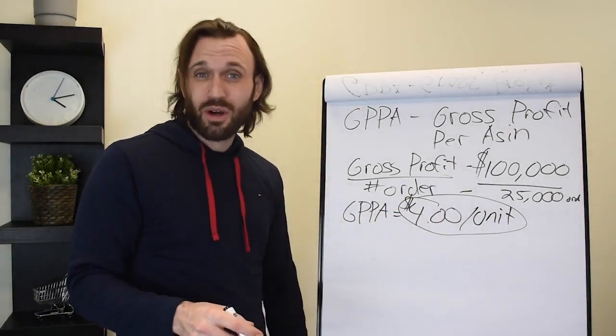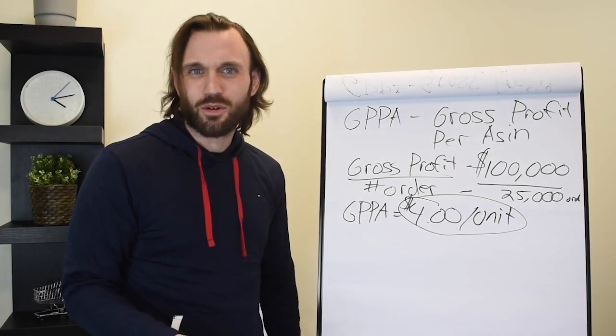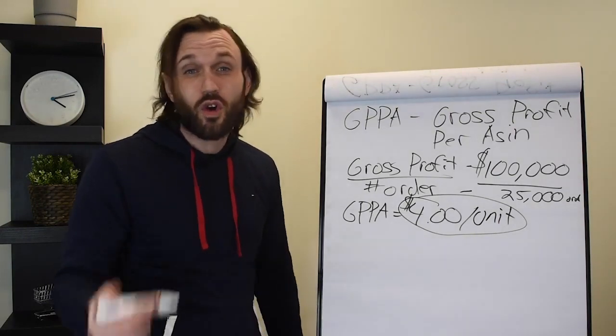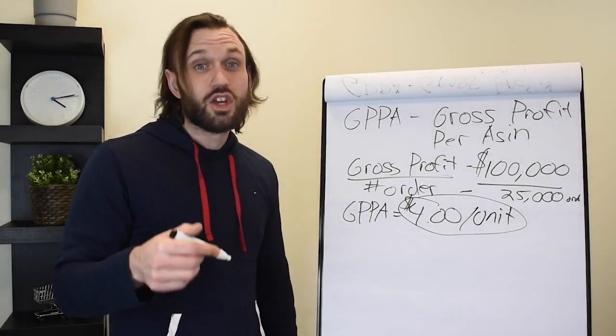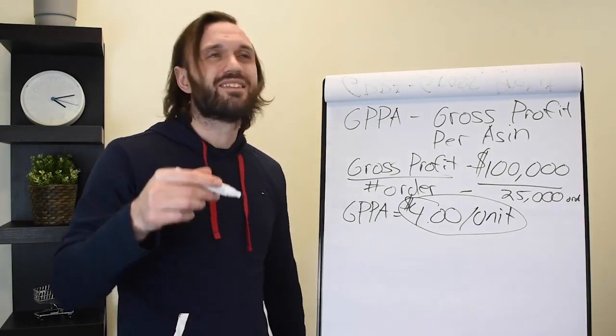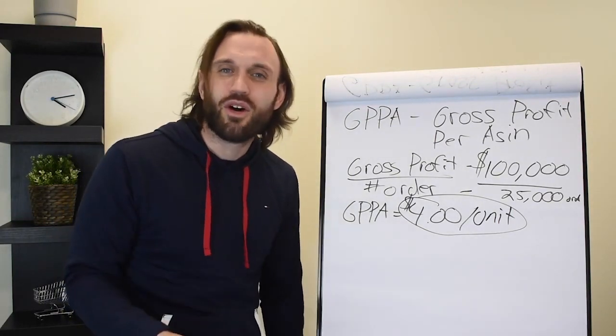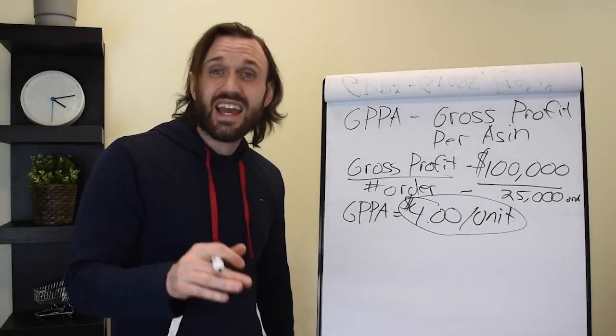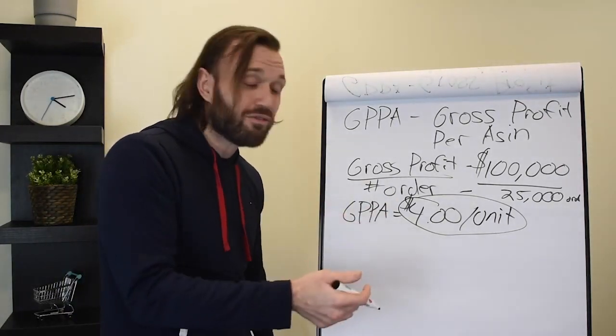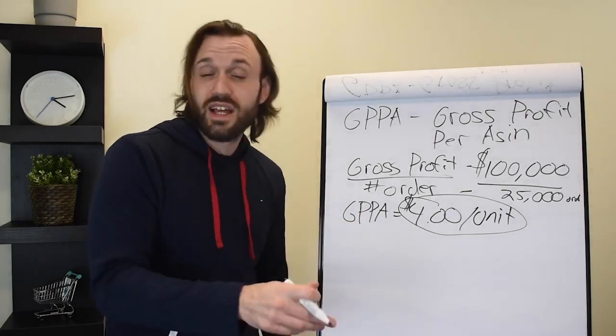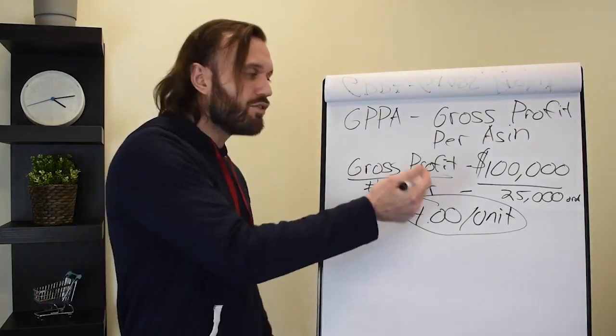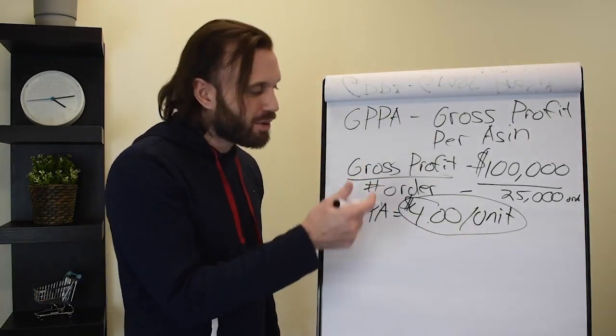This is a super important number to understand. You should really just take a minute, smash that pause button right after you hit the like button, and pull this information. You should have this information documented. If you don't have this information documented, you are in a position to fail with your Amazon business. I see it happen all the time. One of the biggest issues we see is lack of information when documenting profits, net profits, and gross profits and orders. Lacking that information and being totally clueless as to where their business stands.